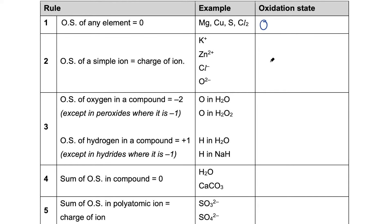The second rule is also pretty straightforward. In any simple ion such as this, the oxidation state is equivalent to the charge of the ion. Looking at potassium, it has a plus charge, so the oxidation state is plus one. In zinc ion, the charge is plus two, so the oxidation state is plus two. In the chloride ion, the charge is minus one, so the oxidation state is minus one. And in the oxide ion, the oxidation state would be minus two.